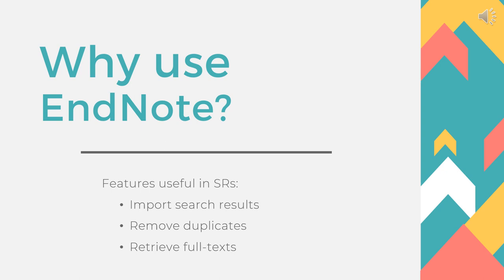But what are some of the reasons that people do use tools such as EndNote? A lot of EndNote and other reference manager features are actually quite useful to the systematic review process. It's possible to import searches from different scientific databases, and there are features to remove duplicate records and retrieve full text PDF files.